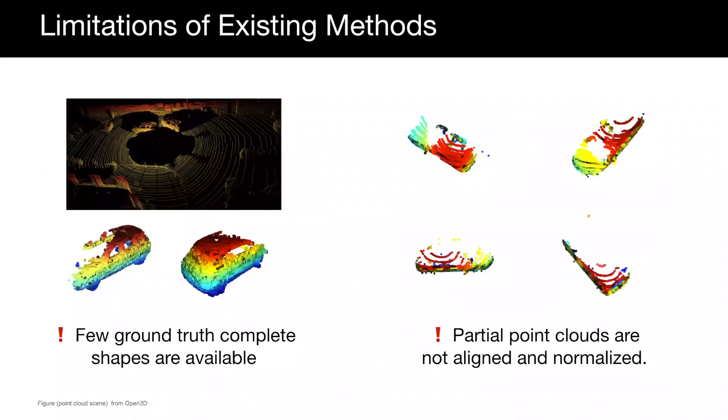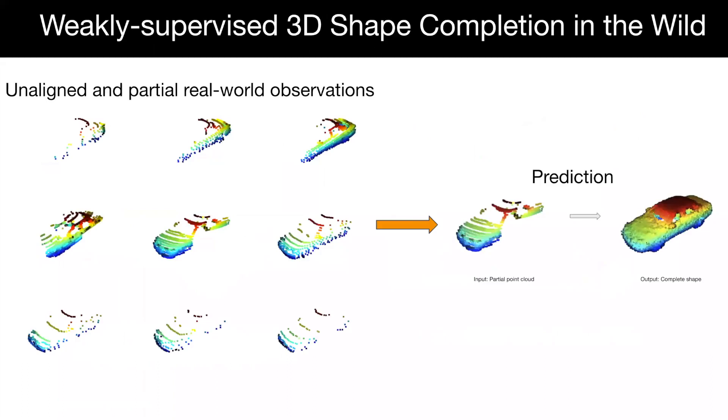These methods do not transfer well to real data since both these conditions are not available. We therefore propose a weakly supervised method for 3D shape completion that trains only on sets of unaligned and partial real-world observations of objects and learns to output complete shapes.